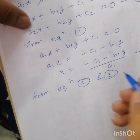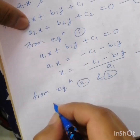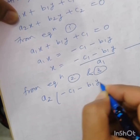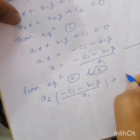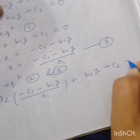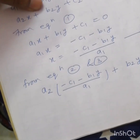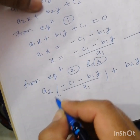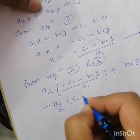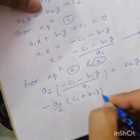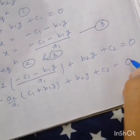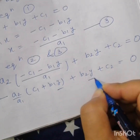In equation two, substitute x: a2 times (minus c1 minus b1y divided by a1) plus b2y plus c2 equals zero. Taking the negative part as common, it becomes minus a2 upon a1 into (c1 plus b1y) plus b2y plus c2 equals zero.